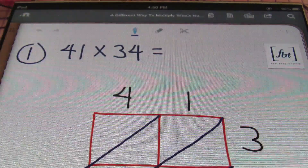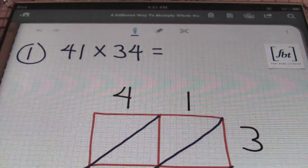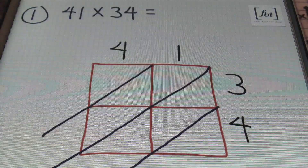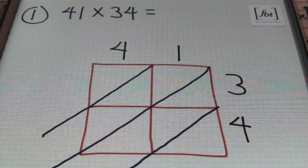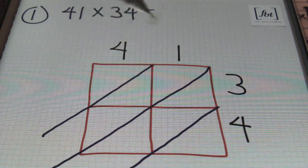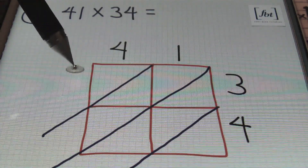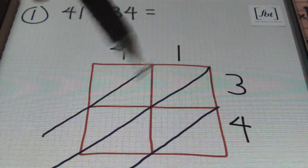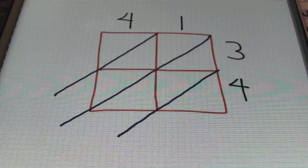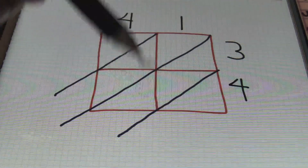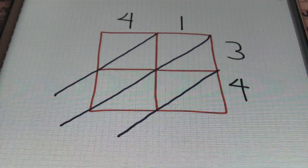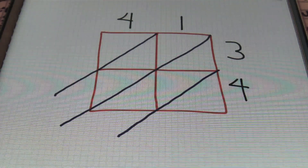Let's go ahead and check out problem number one: 41 times 34. This is a two-digit number times a two-digit number. I have two columns as well as two rows — a column for every digit in 41, so one for four and one for one, and a row for every digit in 34. So I have a two-by-two table. In addition to that, I have diagonals coming from each of the upper right corners of each of the boxes in our table.